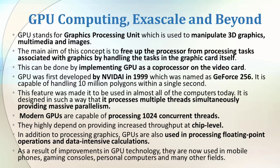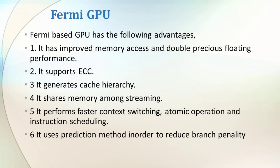GPUs are highly dependent on providing increased throughput at the chip level. In addition to processing graphics, GPUs are also used for floating point operations and data-intensive calculations. As a result of improvements in GPU technology, they are now used in mobile phones, gaming consoles, personal computers, and many other fields. The advantages of GPU include improved memory access, double-precision processing performance, ECC support, shared memory among streaming multiprocessors, faster context switching, atomic operations, and instruction scheduling. It also uses a prediction method to reduce branch penalty.